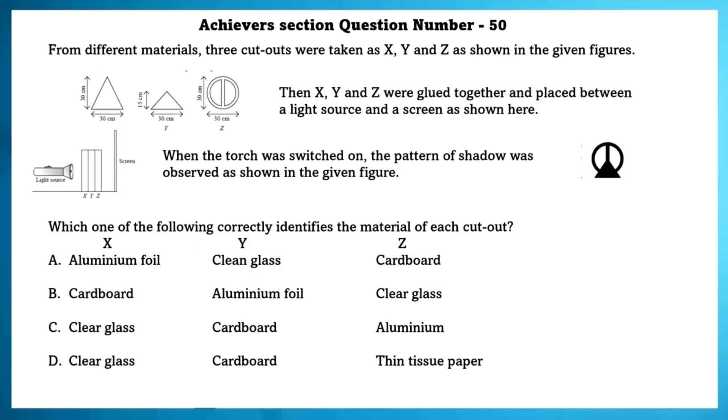Achieve section question number 50. From the different materials, three cutouts were taken X, Y and Z as shown in the given figure. Then, X, Y and Z were glued together and placed between a light source and a screen as shown here. When the torch was switched on, the pattern of shadow was observed as shown in the given figure. Which of the following correctly identifies the material of each cutout? Based on the information above X and X should be transparent and Y and Z should be opaque. That satisfies in the C option.